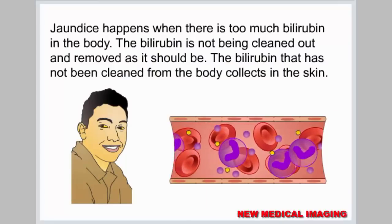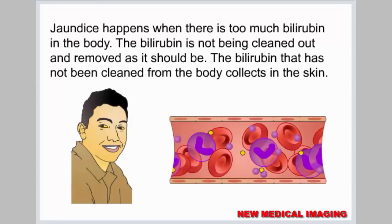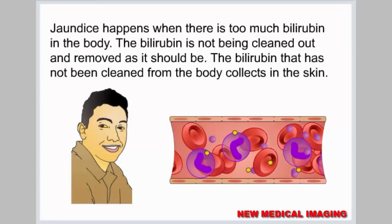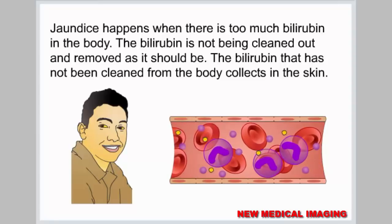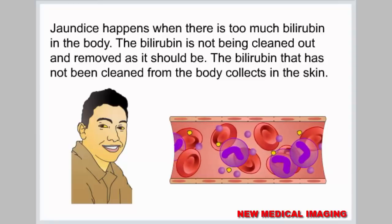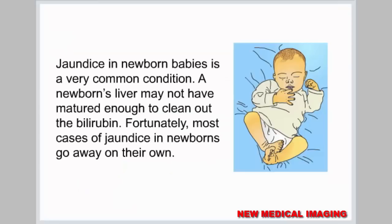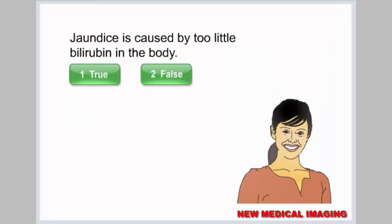Jaundice happens when there is too much bilirubin in the body. The bilirubin is not being cleaned out and removed as it should be. The bilirubin that has not been cleaned from the body collects in the skin. Jaundice in newborn babies is a very common condition. A newborn's liver may not have matured enough to clean out the bilirubin. Fortunately, most cases of jaundice in newborns go away on their own.